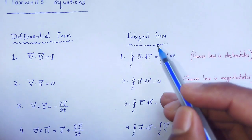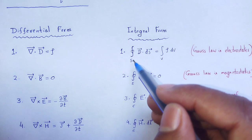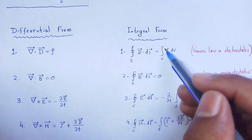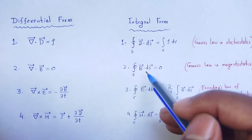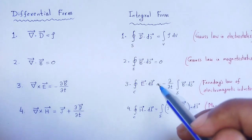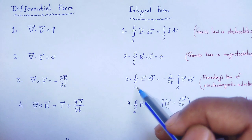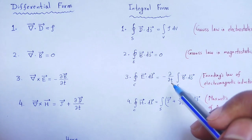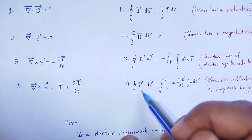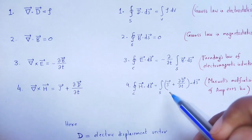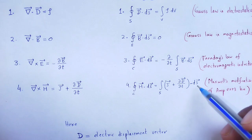The integral form of these equations: the closed surface integral of D dot dS is equal to the enclosed charge; the closed surface integral of B dot dS is equal to 0; the line integral of E dot dL is equal to minus del by del t of the surface integral of B dot dS; the line integral of H dot dL is equal to the surface integral of J plus del D by del t dot dS.